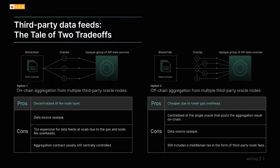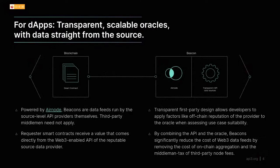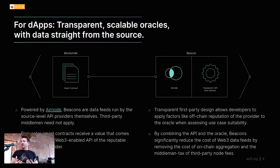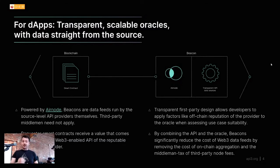Beacons are designed to be transparent, scalable, and to get data straight from the source. The data providers themselves run the beacons, so you know exactly where the data is coming from with no third-party oracle sitting in the middle taking fees. Smart contracts can receive values that come directly from the API. This transparent first-party design lets developers assess the reliability of the data source. By combining the API and the oracle, beacons make data available at lower cost by removing on-chain aggregation costs and eliminating the need to pay third-party node operators.